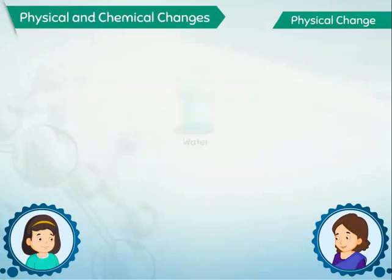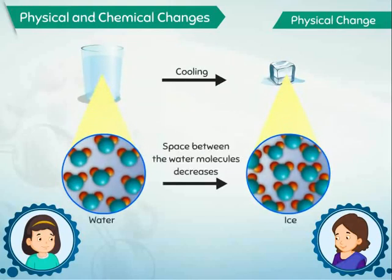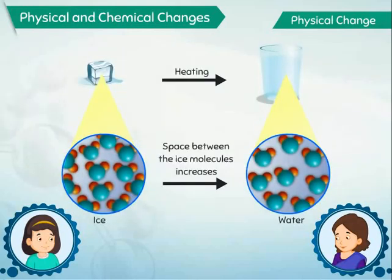For example, when water changes into ice upon cooling, it is because the space between the water molecules has decreased. This can be easily reversed by heating the ice back to water. During this transformation, the water molecules did not change into anything new. This is a physical change.